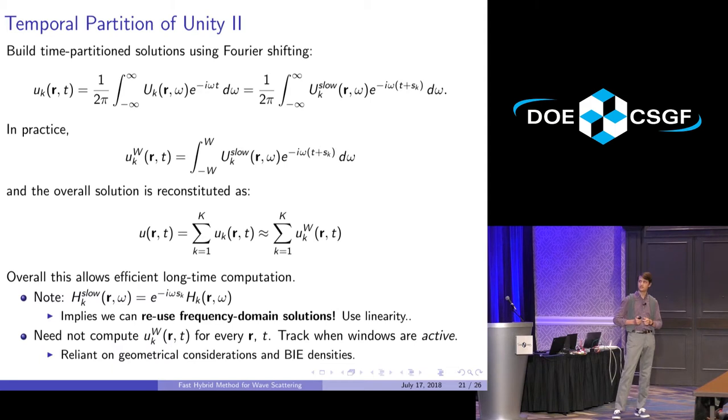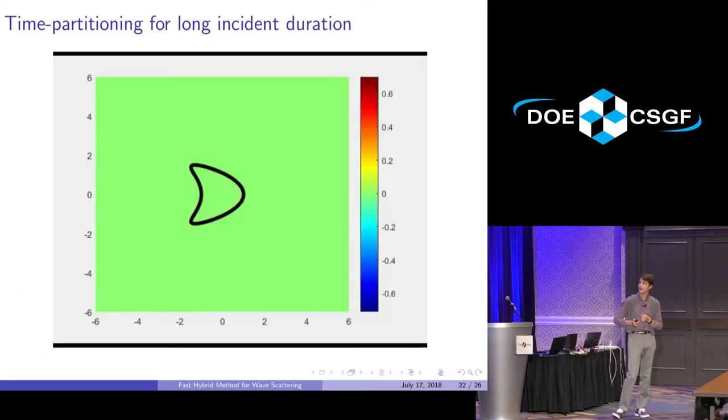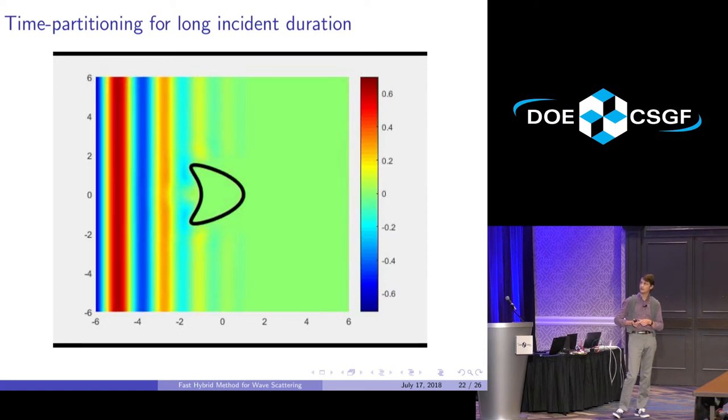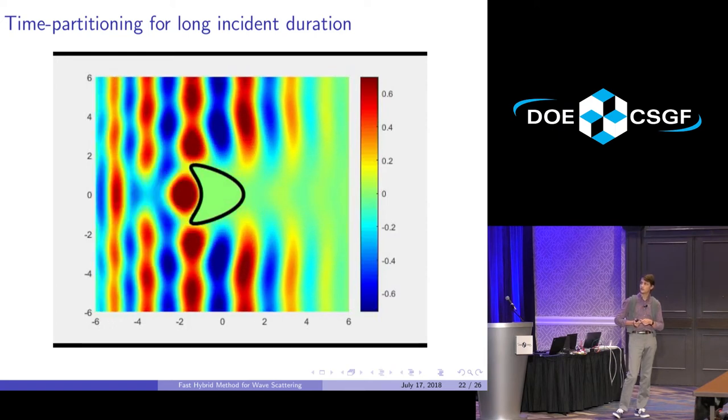One thing that's really interesting about this partitioning is that you don't actually have to evaluate each partition over the entire spatial domain for every time. You can compute the boundary integral densities in time, and then you can use geometrical considerations to see when the scattered field vanishes due to that window.